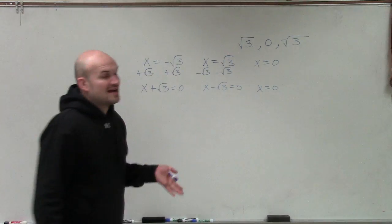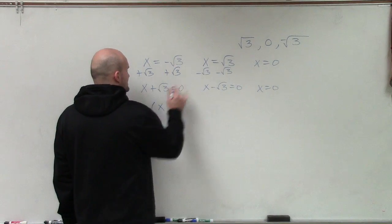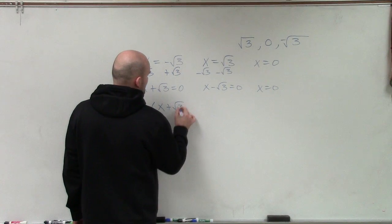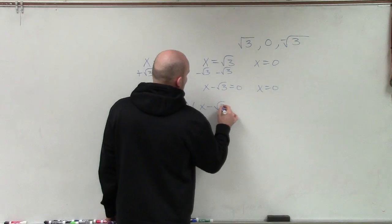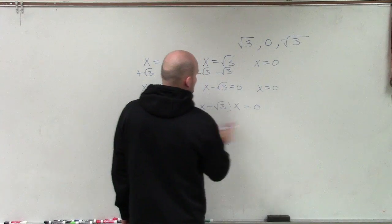Now that I have each one of these factors equal to 0, I can kind of go back to my 0 product property and say, well, the reason why we set each of these factors equal to 0 is because we used the 0 product property, which states, if you have a factor multiplied by another factor, multiplied by another factor, and that's equal to 0, you could break it apart and solve.